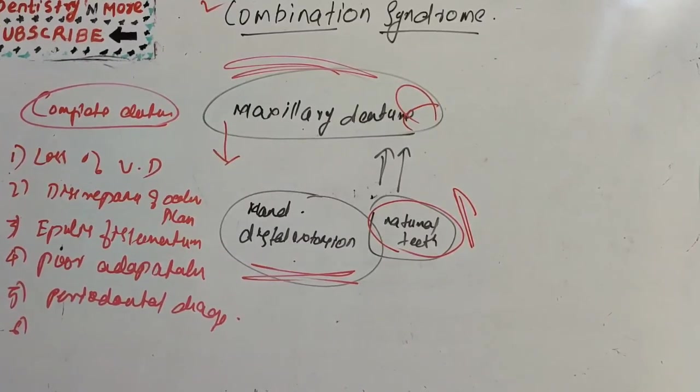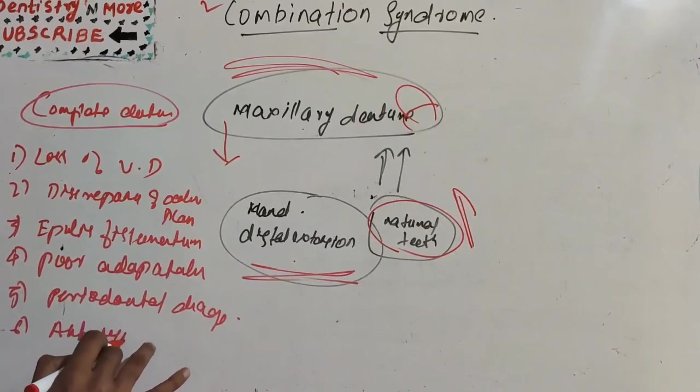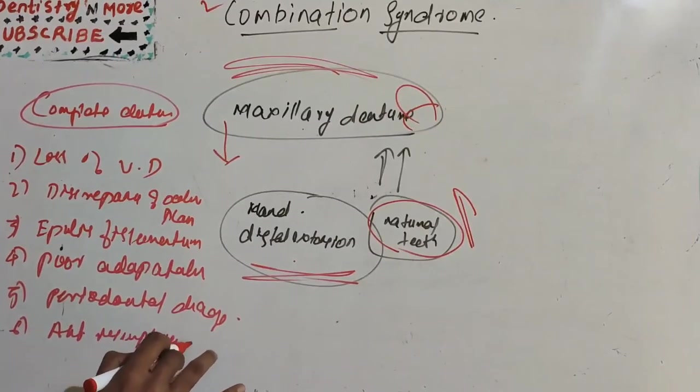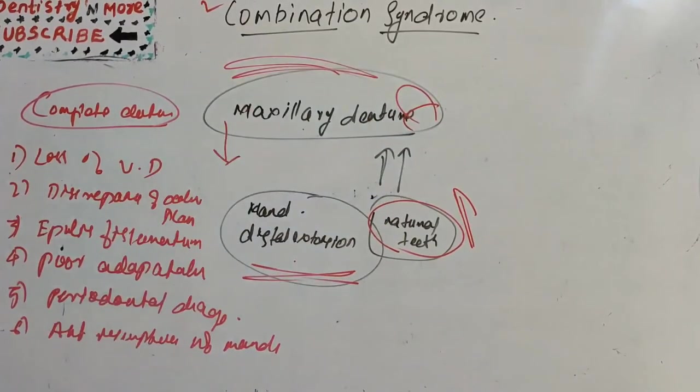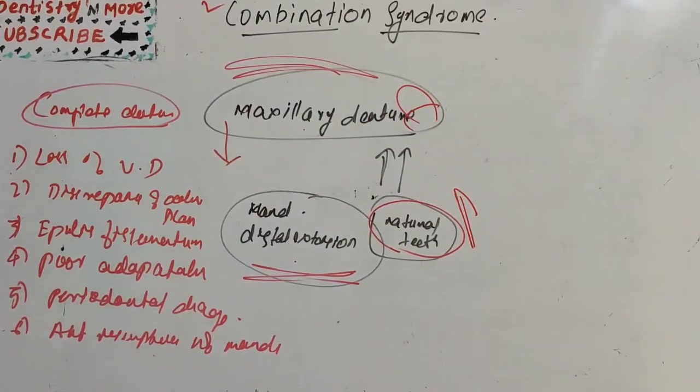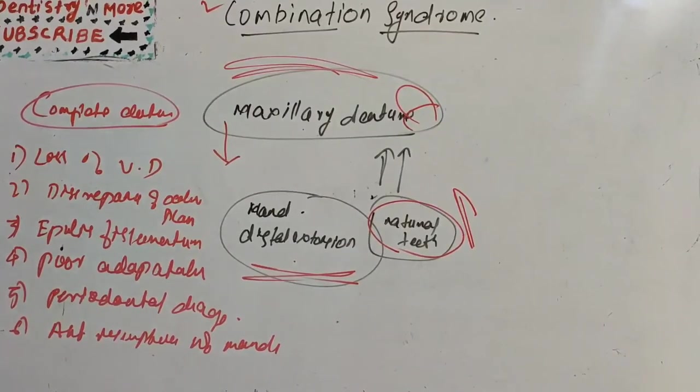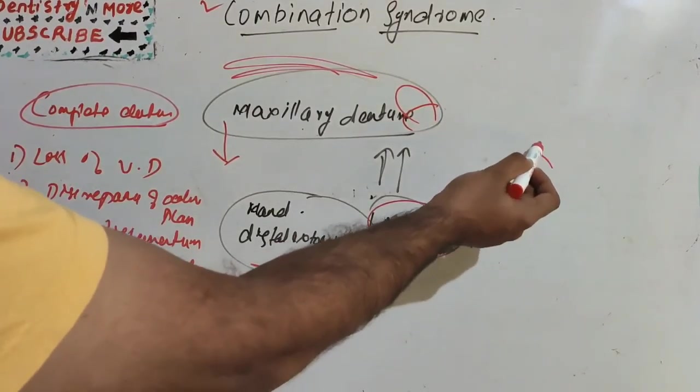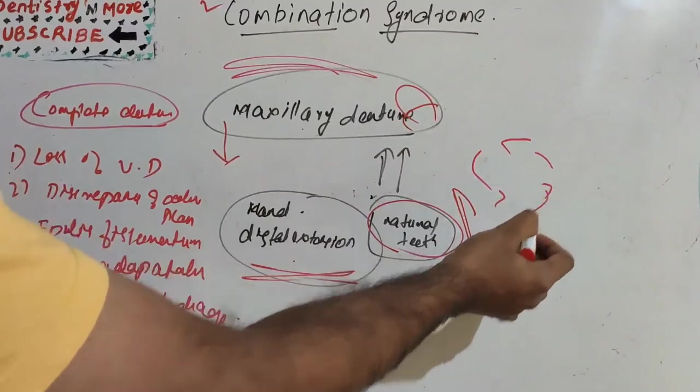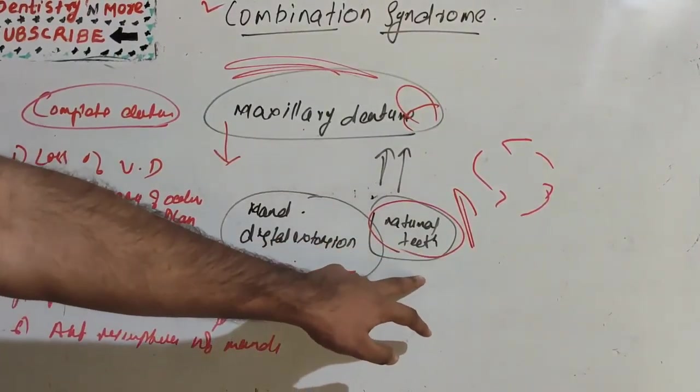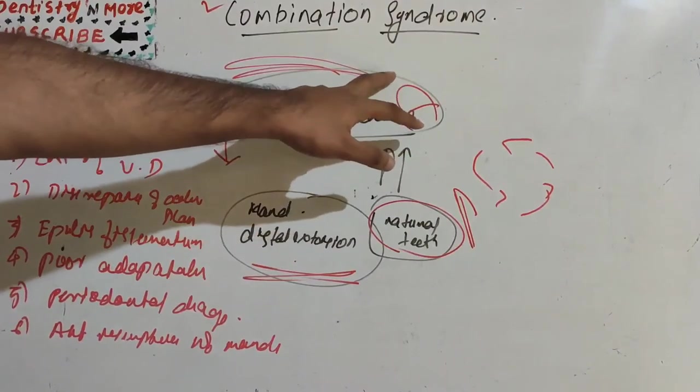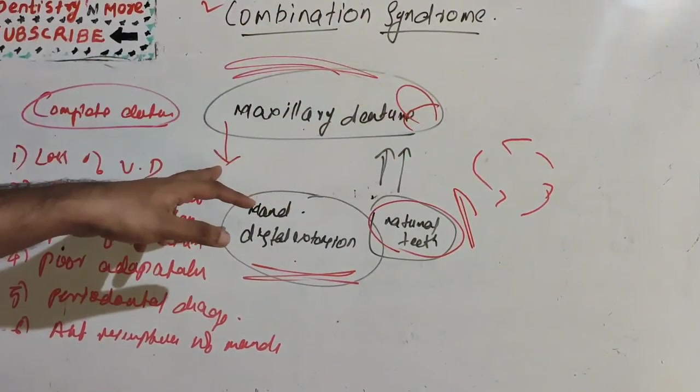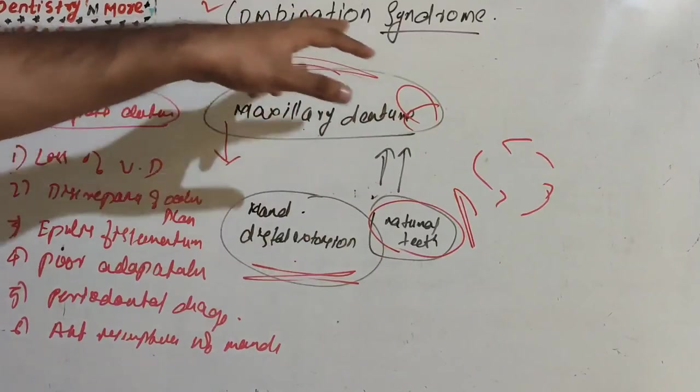And also spatial resorption of the mandible. Similarly, there will be resorption of maxilla. It is like a vicious cycle: natural teeth creating resorption of the maxilla, maxillary tuberosity downgrowth, then resorption of the denture base and residual ridges.